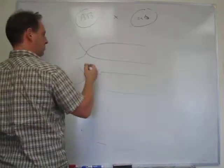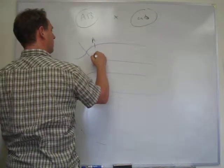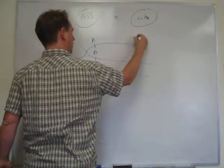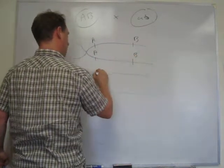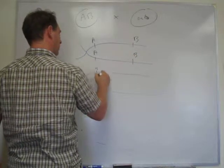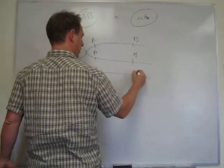We would then, of course, put big A here, big B here, little a, little a, little b, little b.